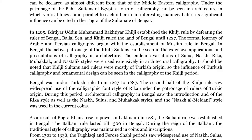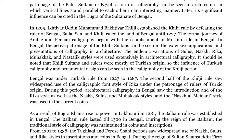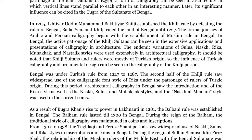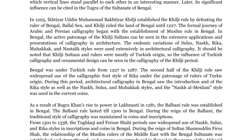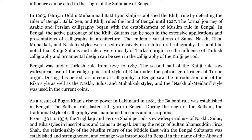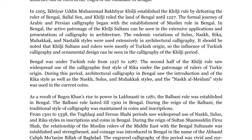The endemic variations of Sulus, Nasq, Rika, Mahakak, and Nastalic styles were used extensively in architectural calligraphy. It should be noted that Khilji sultans and rulers were mostly of Turkish origin, so the influence of Turkish calligraphy and ornamental design can be seen in the calligraphy of the Khilji period.